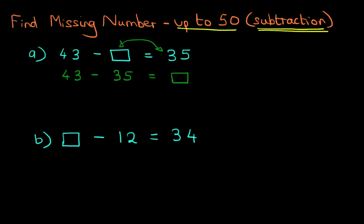So we've got 43 minus 35 equals the missing number. So the missing number is now on one side of the equal sign. And now what we're going to do is we're going to add numbers, not use the vertical format. We're going to add the number to 35 to make it equal to 43.